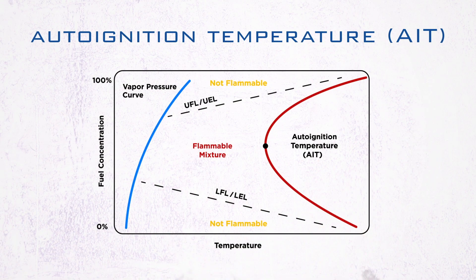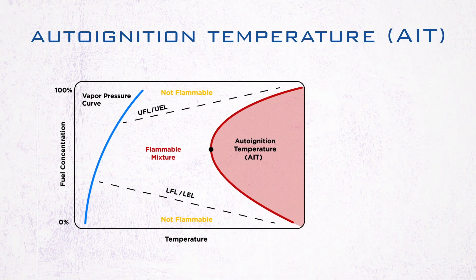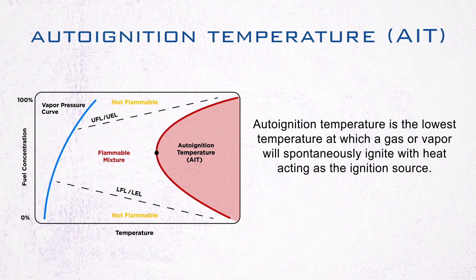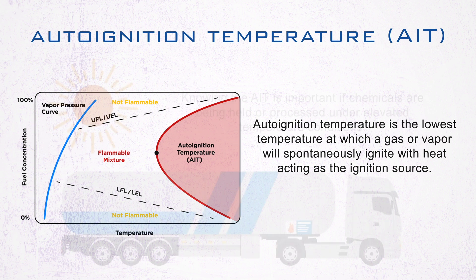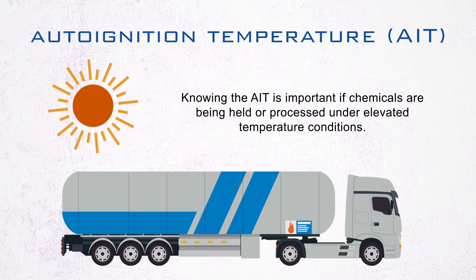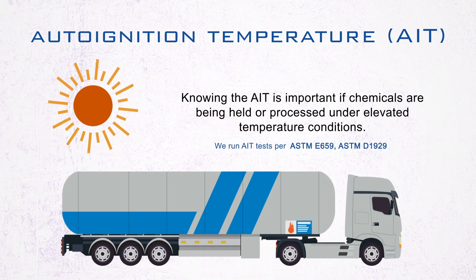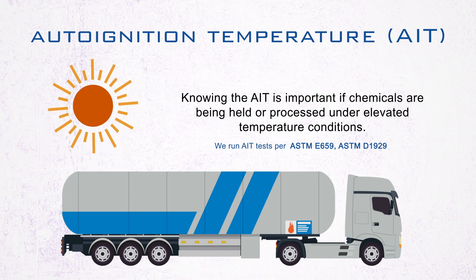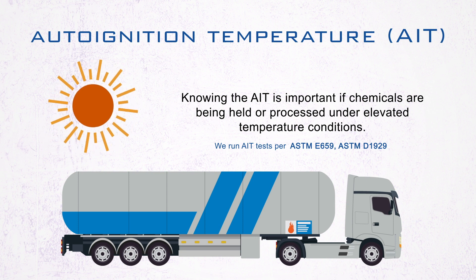Auto-ignition temperature, or AIT, is the lowest temperature at which a gas or vapor will spontaneously ignite with heat acting as the ignition source. Knowing the AIT is important if chemicals are being held or processed under elevated temperature conditions.